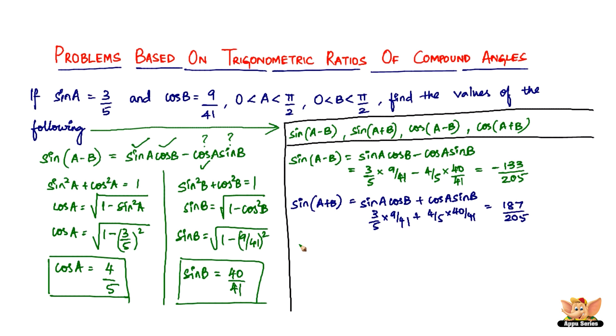And then we have cos of A minus B. Cos of A minus B is cos A cos B plus sin A sin B. Cos A is 4 by 5, cos B is 9 by 41 plus sin A is 3 by 5 times sin B is 40 by 41. Solving which you get 156 divided by 205.